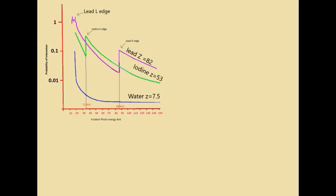As can be seen in the graph, probability is less with water whose effective atomic number is 7.5, than that of iodine Z equals 53 and lead Z equals 82. This is because higher Z means higher number of electrons inside atom and more electrons are eligible for photoelectric effect.